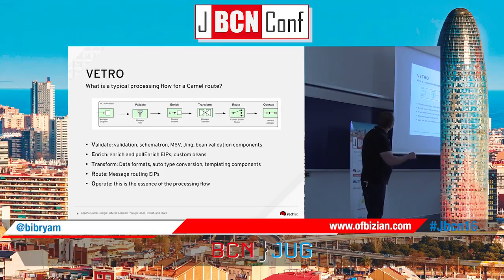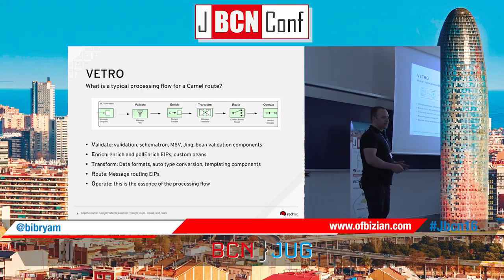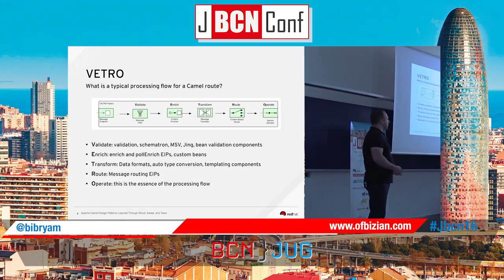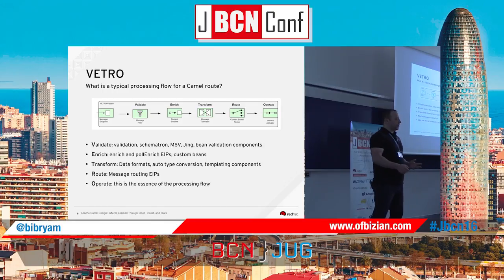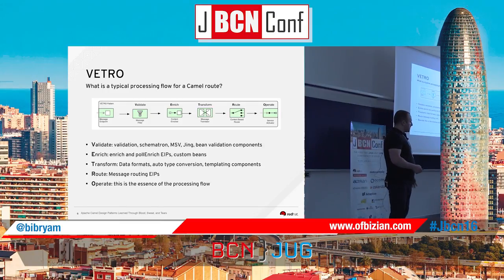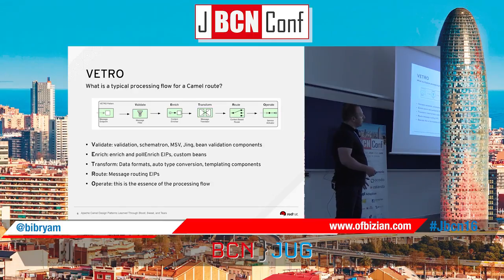The Enrich step is typically used to enrich the incoming data with more context. Not always does the incoming request have enough information for the next step like transforming and routing. In the Enrich step you can use patterns like Enrich and Poll Enrich, or simply have a bean that talks to a database and loads more data. The Transform step is required if you want to transform data to a format easier to work with. The routing step is where you have things like content-based router. And the Operate step is where the actual business logic or integration point of the route is — everything else prepares the data, and in Operate you talk to other systems.